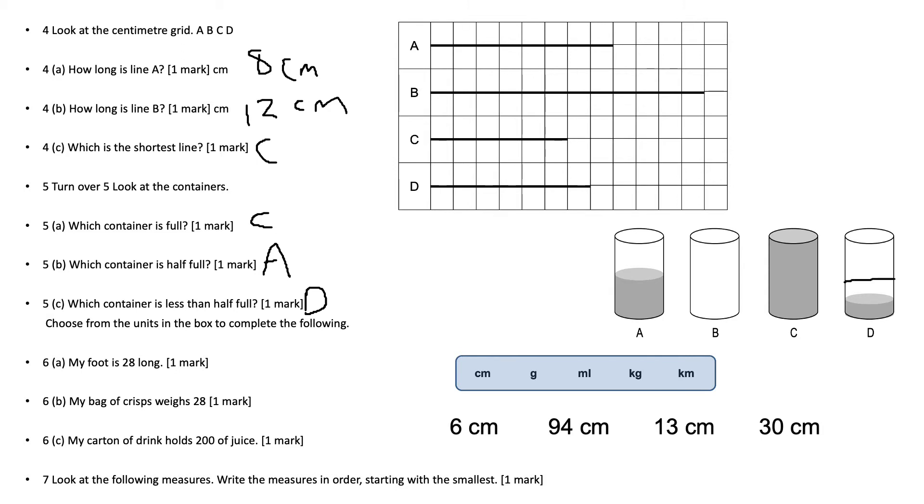Question number six, choose from the units in the box to complete the following. My foot is 28 centimeters long. My bag of crisps weighs 28 grams. My carton of drink holds 200 milliliters of juice.